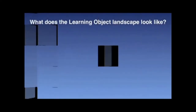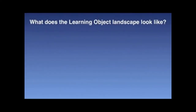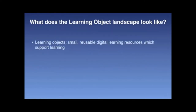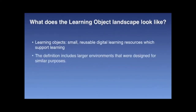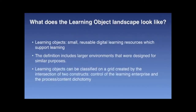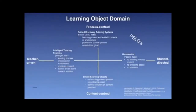Learning objects can be found in a wide variety of shapes and sizes. Typically, they are characterized as small, reusable digital learning resources which support learning. The definition used here also includes larger environments designed for similar purposes. Learning objects can be classified on a grid created by the intersection of two constructs, as shown on the slide.